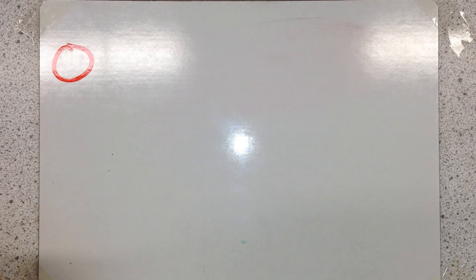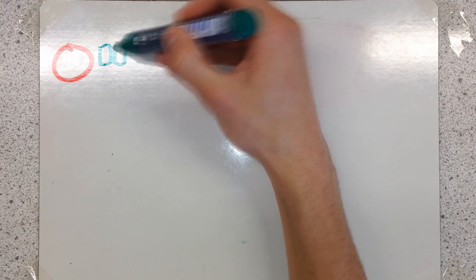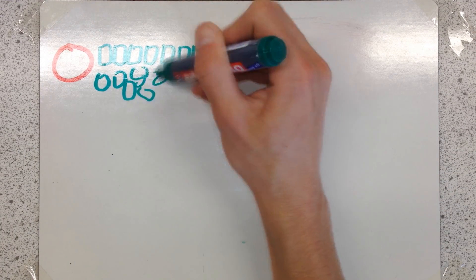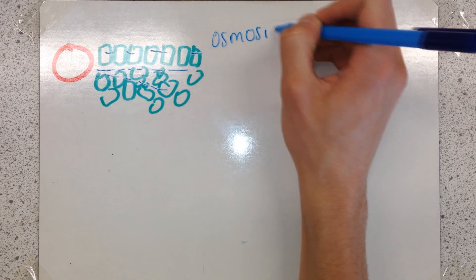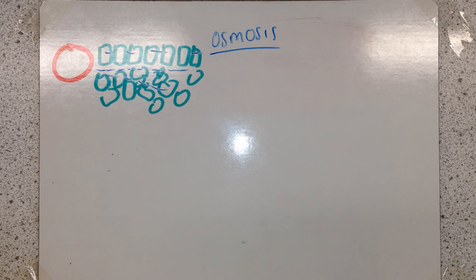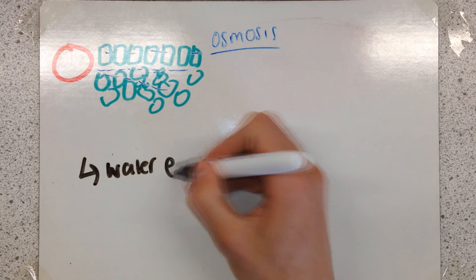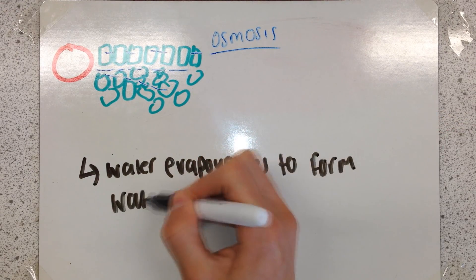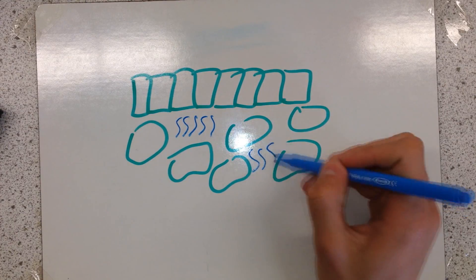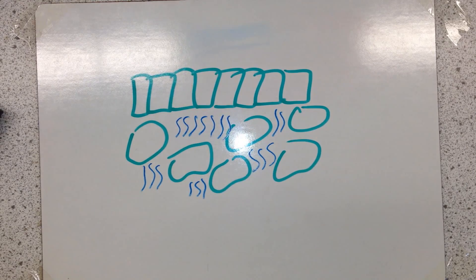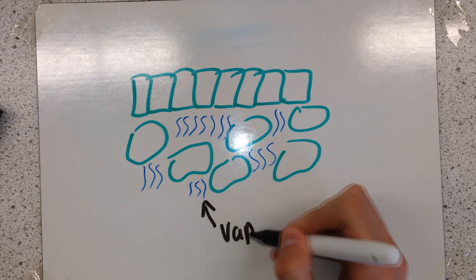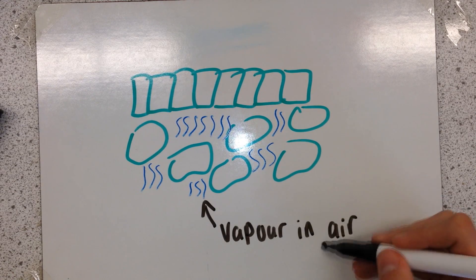I'm going to demonstrate how water leaves the xylem to the outside air by osmosis. Water leaves from the xylem into these cells. When it reaches these cells it evaporates into water vapor. The spongy mesophyll has large air gaps in between the cells, which helps the water vapor diffuse out of the leaf.